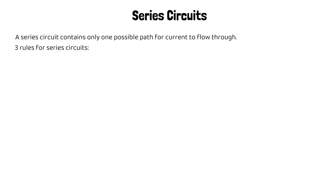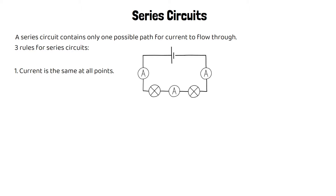There are three rules you need to know for series circuits. The first one is that current is the same at all points in the circuit. So if the first ammeter has a reading of five amps, all the other ammeters will also have a reading of five amps. It doesn't matter where you put your ammeter in the circuit — it will always display the same reading for current.